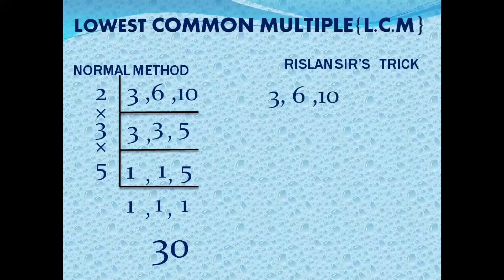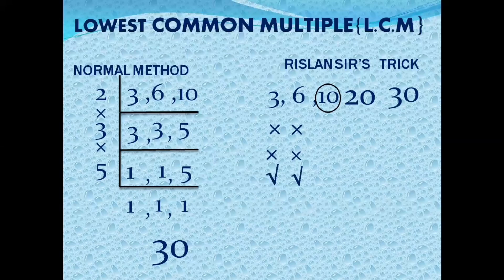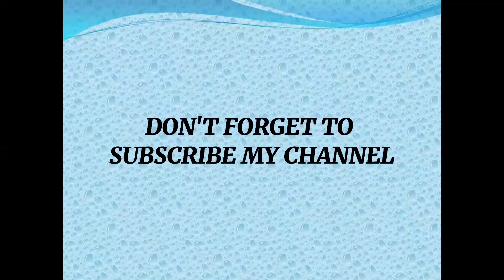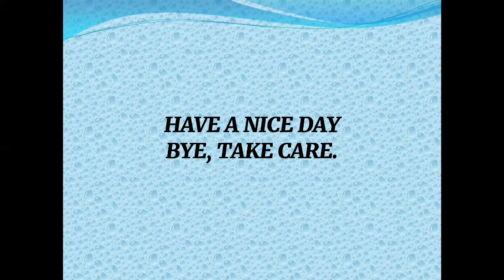According to my method for 3, 6, 10: largest number is 10. Can 10 be divided by 3? No. Can 10 be divided by 6? No. Multiples: 20 — can't divide by 3 or 6. Next: 30 — can 30 be divided by 3? Yes. Can 30 be divided by 6? Yes. So LCM is 30. Students, don't forget to subscribe my channel. Have a nice day, bye, take care.